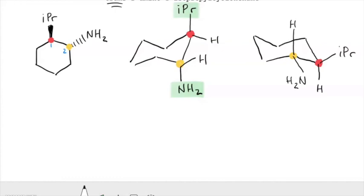We can already see that by doing a ring flip, we are taking those substituents at carbons 1 and 2, the isopropyl group and the amino group, and we are pushing them into the equatorial position to minimize those 1,3-diaxial interactions. As a result of that, this is going to be our more stable conformation.